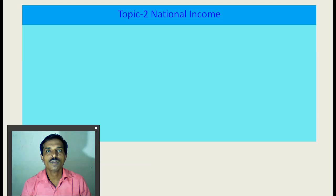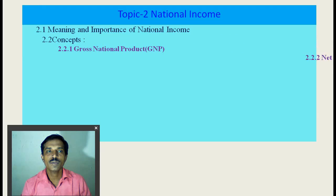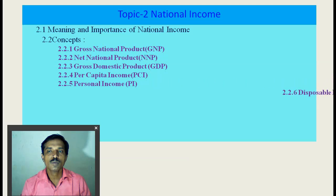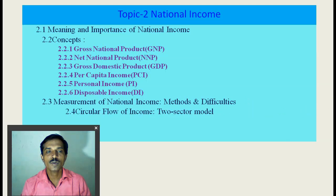Let us start with Topic No. 2. National Income is Topic No. 2. Under it, there is Point 2.1: Meaning and Importance of National Income. We will also see concepts of National Income such as Gross National Product (GNP), Net National Product (NNP), Gross Domestic Product (GDP), Per Capita Income (PCI), Personal Income (PI), Disposable Income (DI), methods of measurement of national income, difficulties in measurement, and Point 2.4 — the Circular Flow of National Income, the two-sector model.